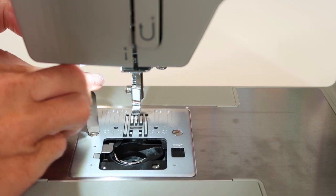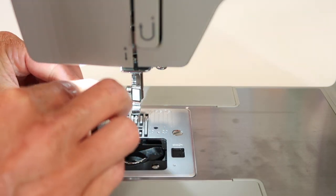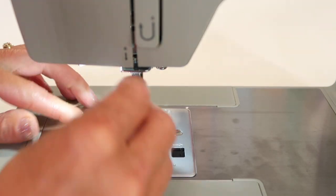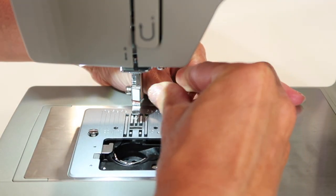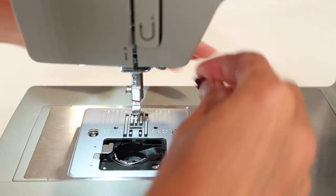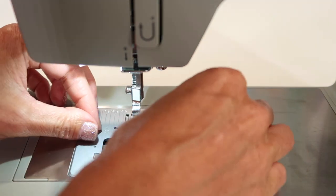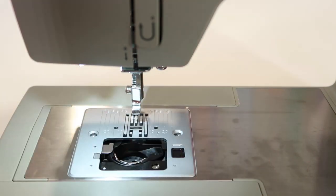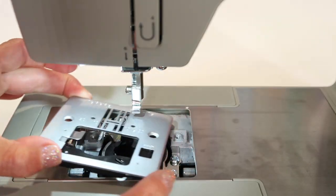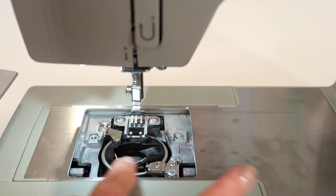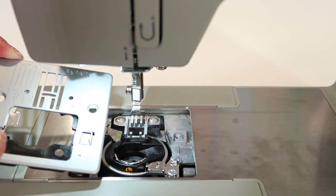Now take your screwdriver and loosen the screws that are holding this throat plate on. Once they're loosened, I can usually take my finger and then just spin them off the rest of the way. So underneath here, here's the thing that you are probably going to be surprised, is seeing how much lint is built up in and underneath this plate.